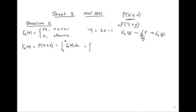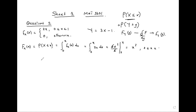Given f(x) = 2x, the CDF F(x) is the integral from 0 to x of 2u du. Integrating gives 2·u²/2 evaluated from 0 to x, and the 2s cancel, so we just have x². This is defined for 0 ≤ x ≤ 1.